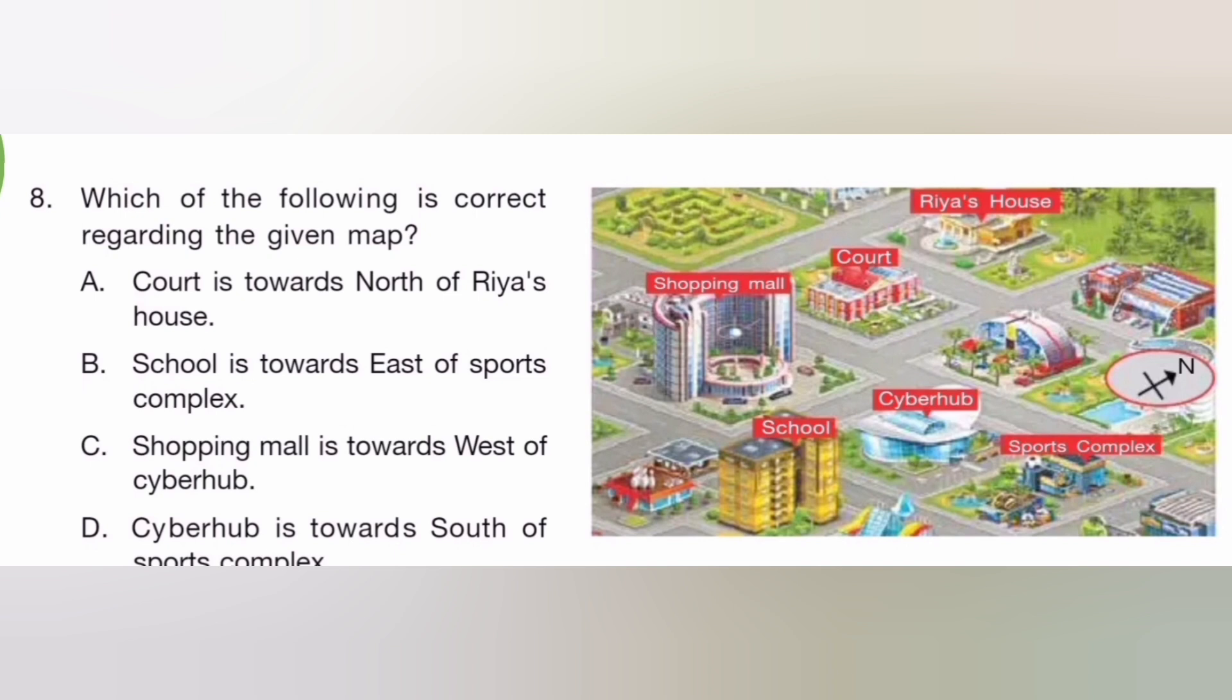Which of the following is correct regarding the given map? A: Court is toward the north of Riya's house. School is toward east of the sports complex. Shopping mall is toward the west of cyberhub. Cyberhub is toward south of the sports complex. The answer is C.